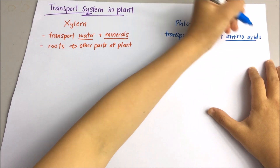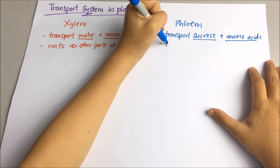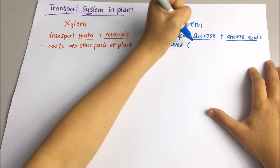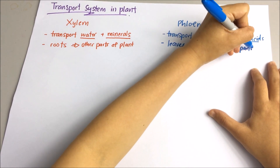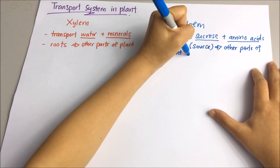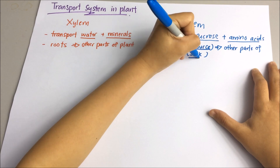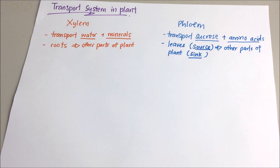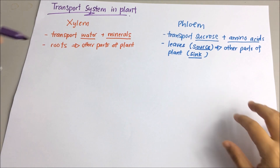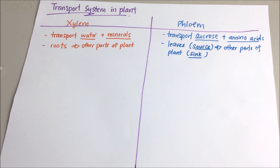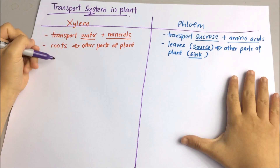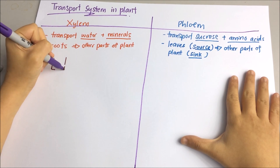The nutrient-rich regions that supply sugars for the rest of the plant are called the sources. Sources include the leaves where the sugar is generated through photosynthesis. The leaf is regarded as the source because it is a region with high sugar concentration, and the sugar will be transported to the sink.